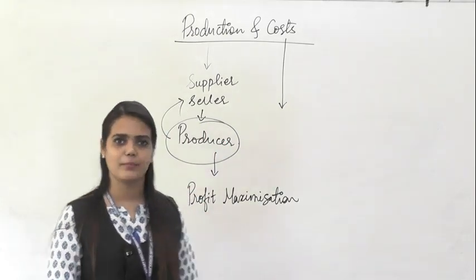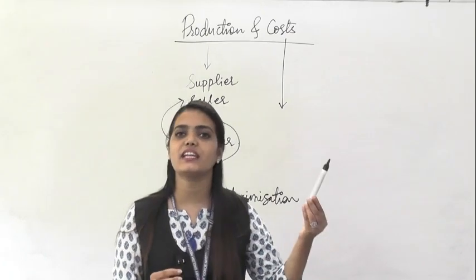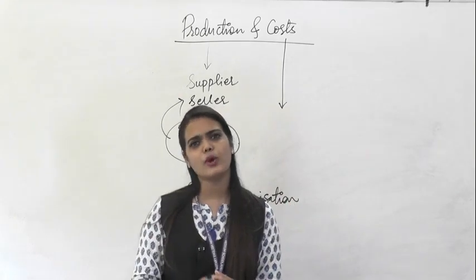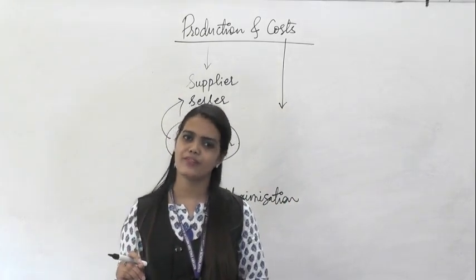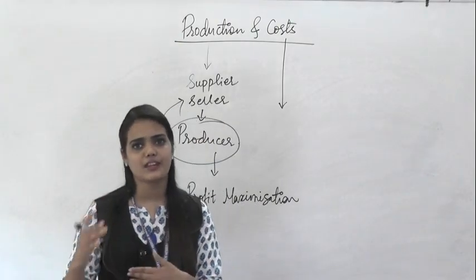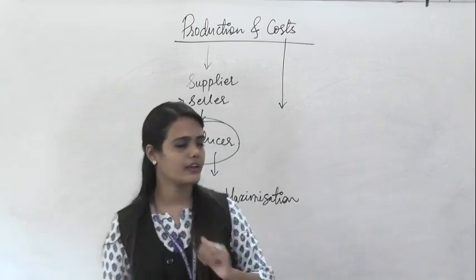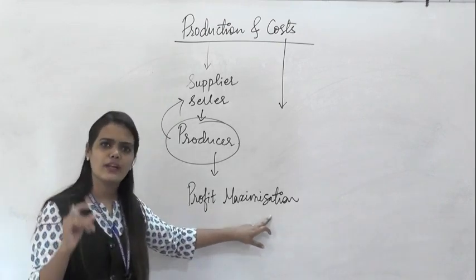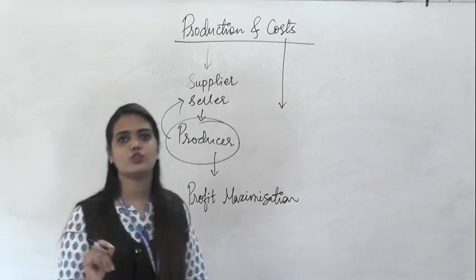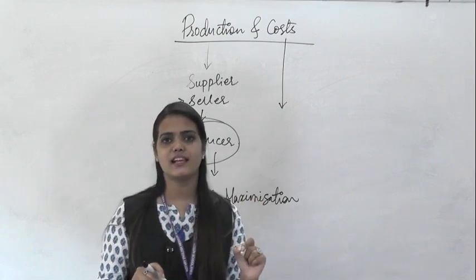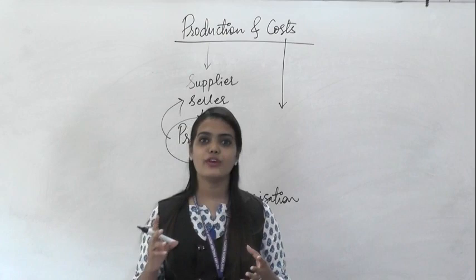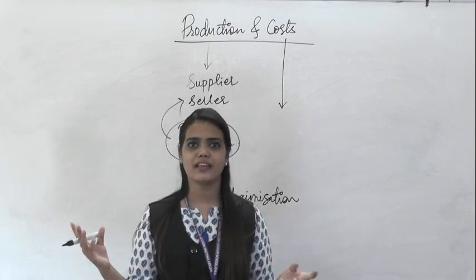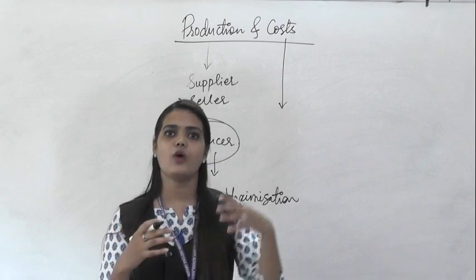Anybody can earn profit. For example, if I buy a commodity for 10 rupees and sell it for 11 rupees, that 1 rupee is my profit. But are producers and sellers in an economy only interested in earning a little profit whenever possible? No. With the passage of time, moving from short run to long run, they want to establish themselves and earn as much profit as possible — meaning they have the sole intention of maximizing profit. In economics, every producer and seller is a ruthless profit maximizer.